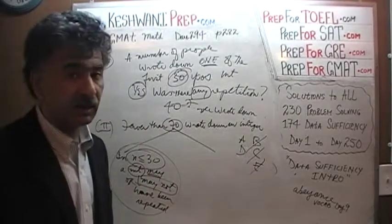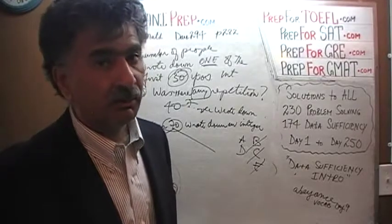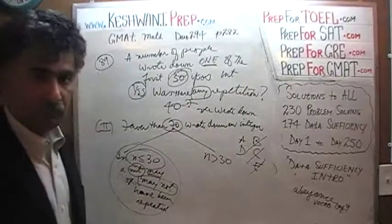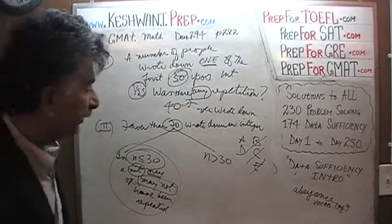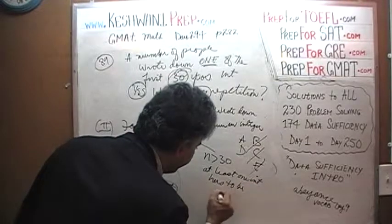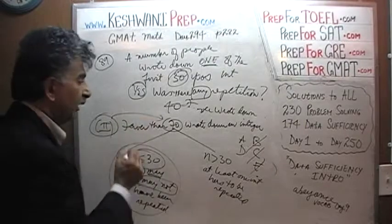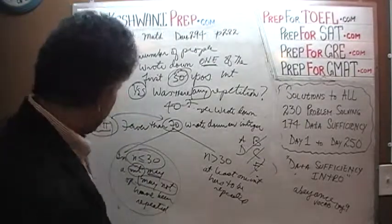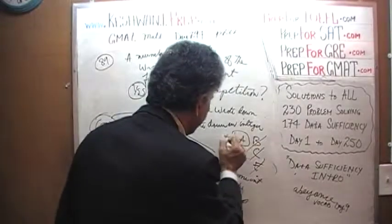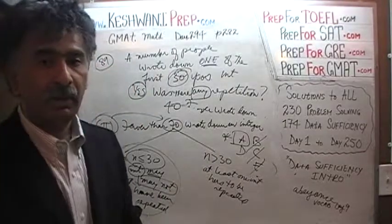On the other hand, if there are more than 30 people, then at least one number must be repeated. But because the second statement only tells us there are fewer than 70 people, we don't know whether there are fewer than 30 or more than 30. It just says fewer than 70 — it's not enough. The second statement by itself is not enough. The answer is A — the first statement did the job quite nicely, but the second statement did not. I will see you tomorrow.